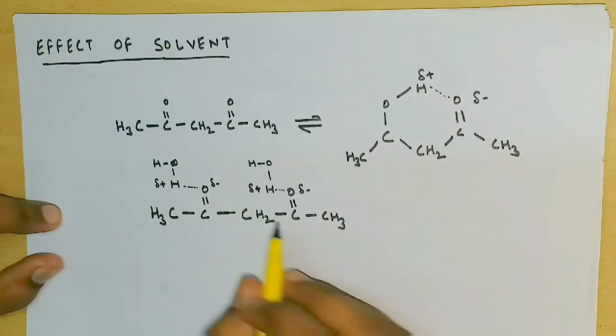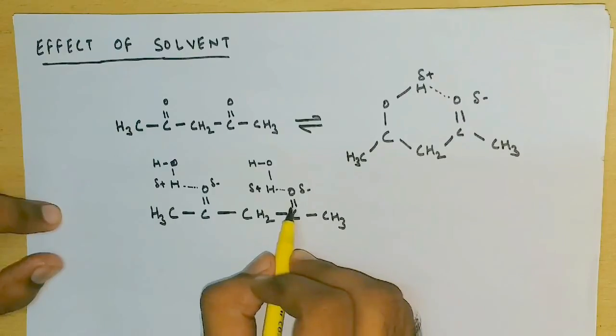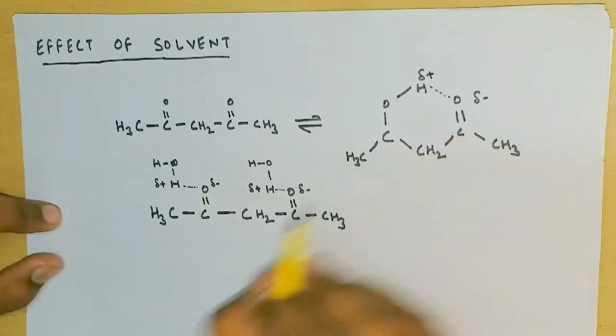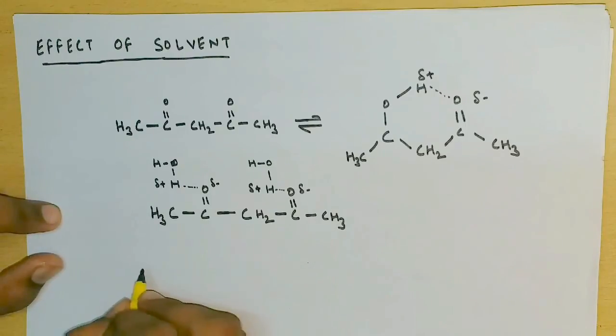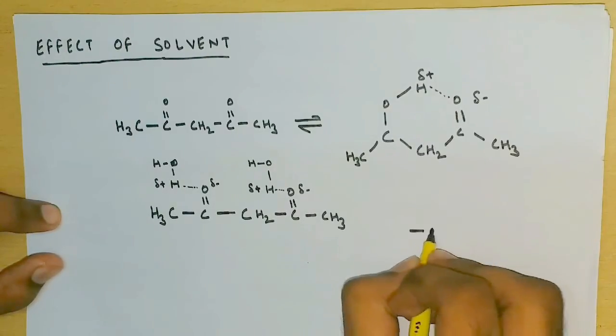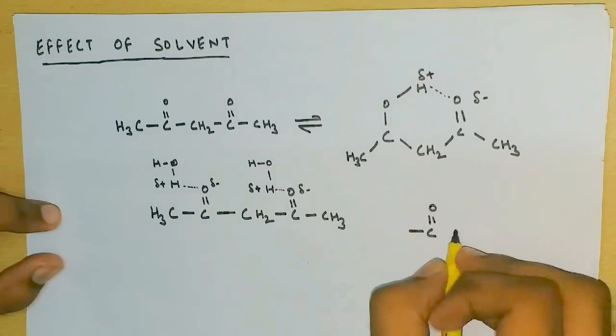Now someone might say that this hydrogen bonding can stabilize the enol form as well, because the enol form also has two oxygens with partial negative charge. So to understand this, we have to draw the carbonyl group separately and analyze it.